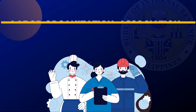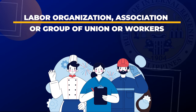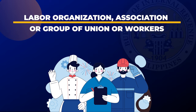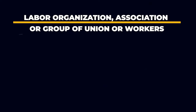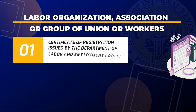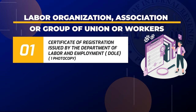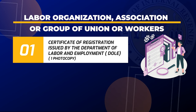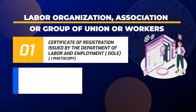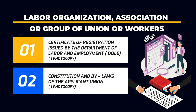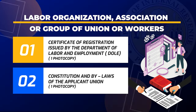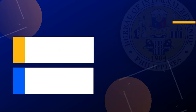For labor organizations, associations, or groups of unions or workers: Certificate of Registration issued by the Department of Labor and Employment, one photocopy; and the Constitution of Cooperation, one photocopy.